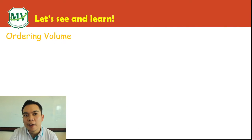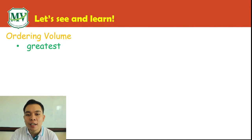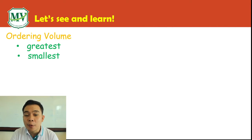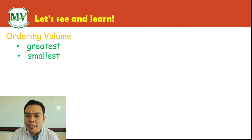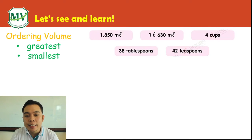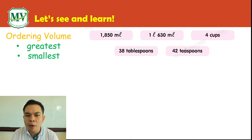Now, how do we order volumes and capacity from greatest to smallest or smallest to greatest? First, we need to find which has the greatest and the smallest volume. Look at these different volumes — which is the smallest volume and which is the greatest volume?